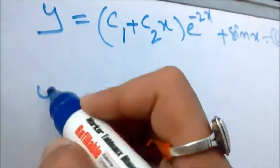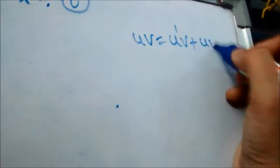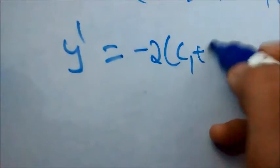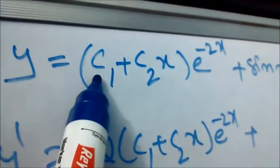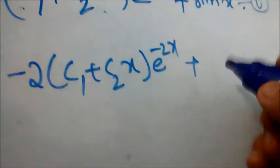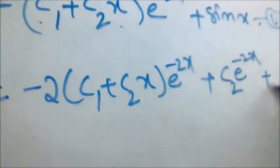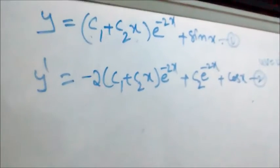Differentiating equation 1, using the UV formula where (UV)' = U'V + UV', we get: y' = -2(c1 + c2·x)·e^(-2x) + c2·e^(-2x) + cos(x). We take this as equation 2. Now we apply the given initial conditions to equations 1 and 2.